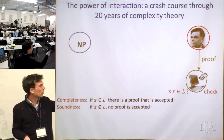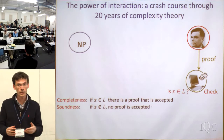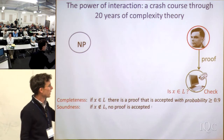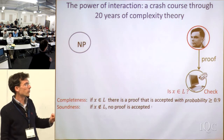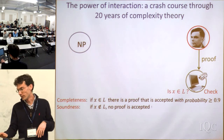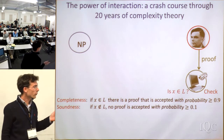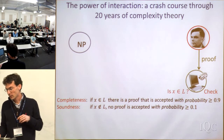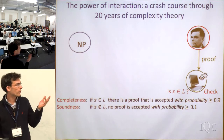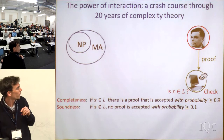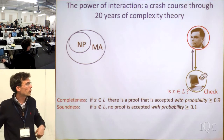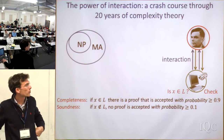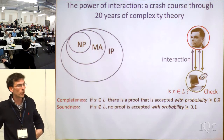You can generalize this by adding randomness, allowing the verifier to be randomized polynomial-time instead of deterministic. In that case we relax completeness and soundness: instead of saying a proof should be accepted, we say it's accepted with high probability, say 90%. In the soundness case, no proof should be accepted with probability more than 0.1. Going further, what if we allow the verifier to ask questions to the prover and have an interaction? We get a more general complexity class called IP for interactive proof.